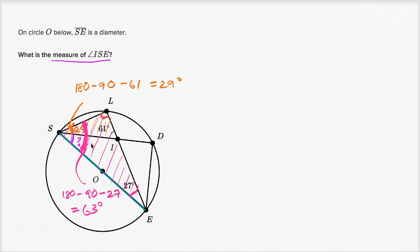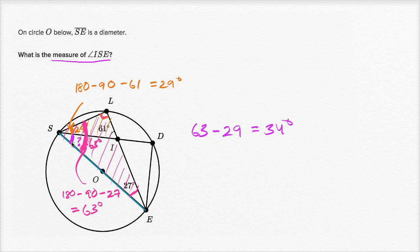So this large angle is 63 degrees and the smaller one is 29 degrees, and so angle ISE — which we set out to figure out — is going to be 63 degrees minus the 29 degrees. So 63 minus 29 is once again equal to 34 degrees. The way I did it just now was a little bit harder — it really depends what jumps out at you. The first way I tackled it does seem a little bit easier and clearer.